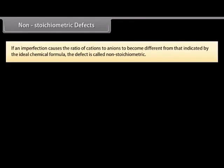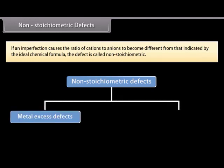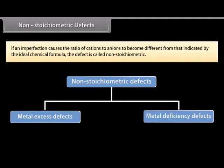Non-stoichiometric defects occur when an imperfection causes the ratio of cations to anions to become different from that indicated by the ideal chemical formula. There are two types: metal excess defects and metal deficiency defects.